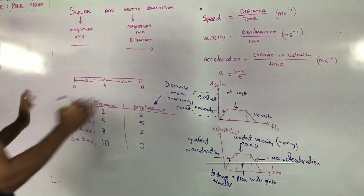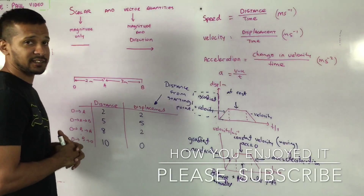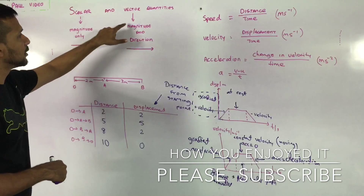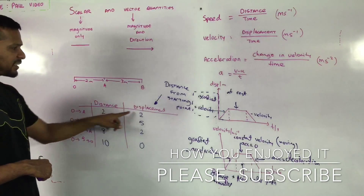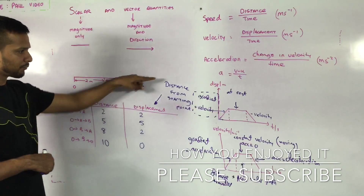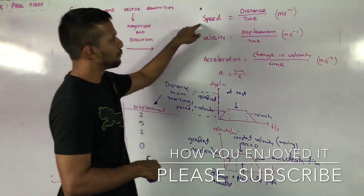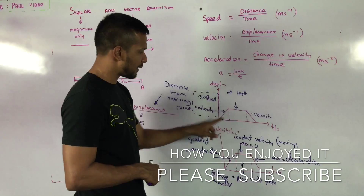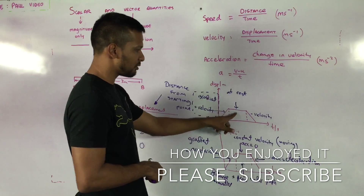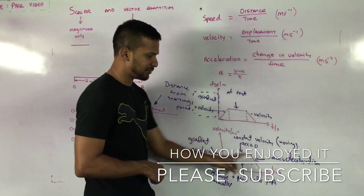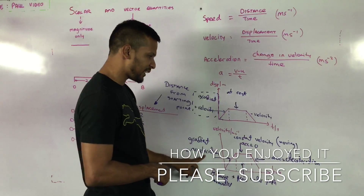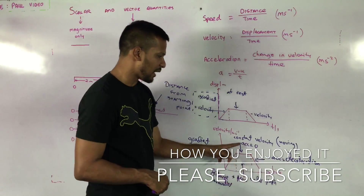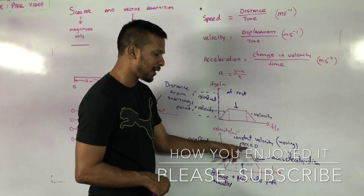Quick summary of kinematics: scalar quantities have magnitude only; vector quantities have magnitude and direction. Distance is scalar; displacement is vector — displacement is distance from a starting point. Speed, velocity, and acceleration follow the same scalar/vector distinction. Displacement-time graph: gradient gives velocity; horizontal line means rest. Velocity-time graph: gradient gives acceleration; negative gradient is deceleration; horizontal line means no acceleration.